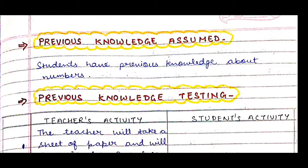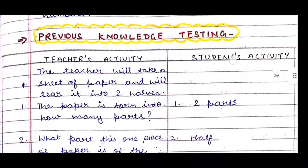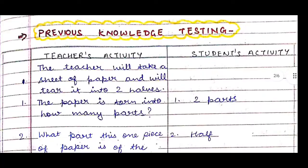Students have previous knowledge about numbers — they already know about different types of numbers. Now, it is important as a teacher to test their previous knowledge. So next comes previous knowledge testing, where we make two columns: teacher's activity on the left and students' activity on the right.